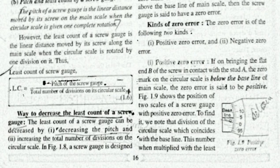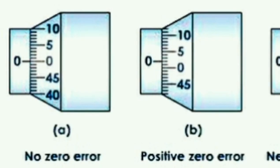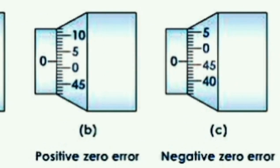For the least count, you can decrease it by increasing the number of divisions on the circular scale. For zero error in the screw gauge: when the zero point of the main scale and the zero point of the circular scale coincide, there will be no zero error. Similarly, there are two kinds: positive zero error and negative zero error.